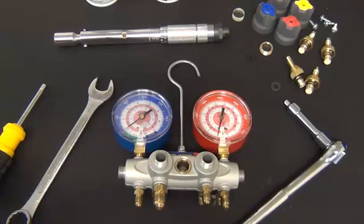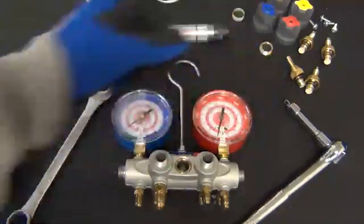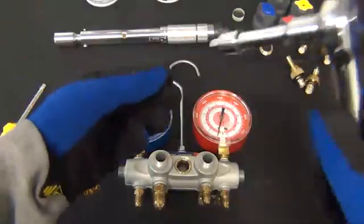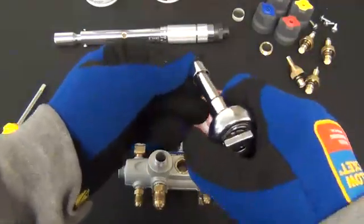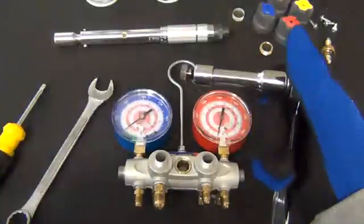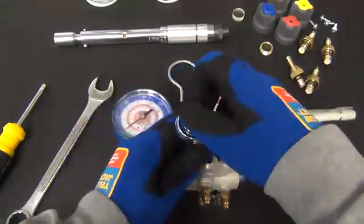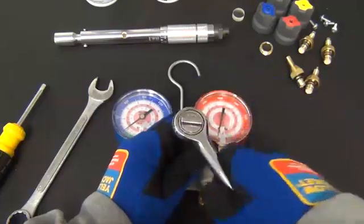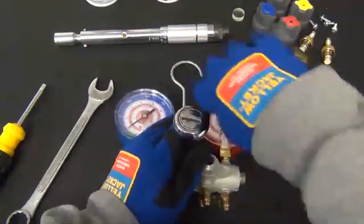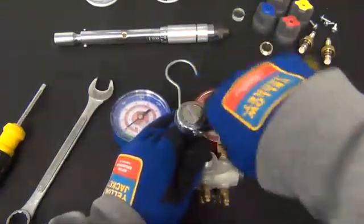We're now going to take the sight glass tool and the socket to remove the sight glass retainer. Place the tool inside the retainer and use the wrench turning counterclockwise to remove the retainer.